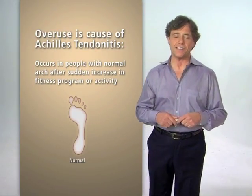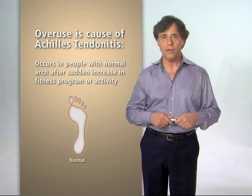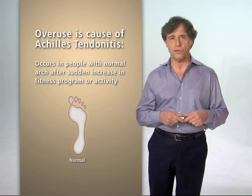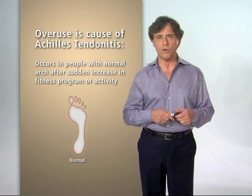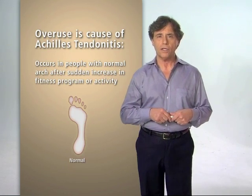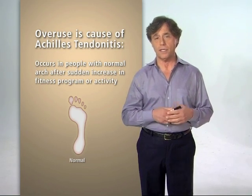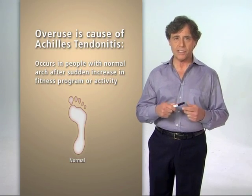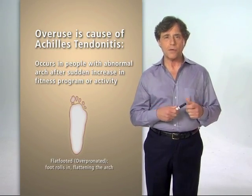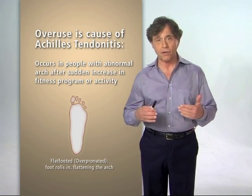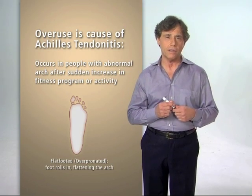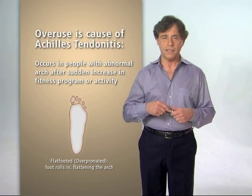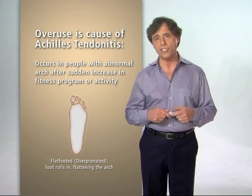The main cause of Achilles tendonitis is overuse. This overuse can occur when the anatomy — the parts list — is normal, meaning you have a normal arch in your foot. A sudden increase in your fitness program, where you find yourself walking or running more often, can cause overuse and result in Achilles tendonitis even with a normal arch. Sometimes, however, the anatomy is abnormal. In this case, you might have a flat foot or a flattened arch — some people call this overpronation. In that case, your foot rolls in and you put even more stress on your Achilles tendon, resulting in overuse and inflammation of the Achilles tendon.